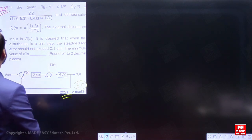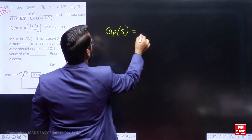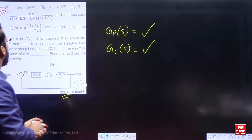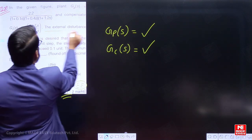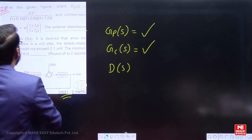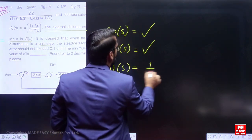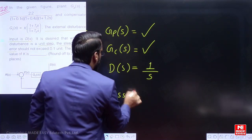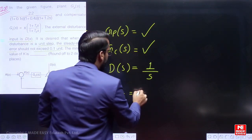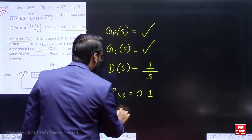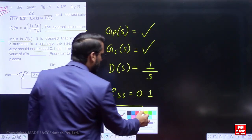First, let us read the question. In the given figure, the examiner has given us GPS and the compensator GCS. The external disturbance input is D(S). It is desired that when the disturbance is a unit step — meaning D(S) equals 1/S — the steady-state error should not exceed 0.1 units. The examiner wants to know the minimum value of K required.